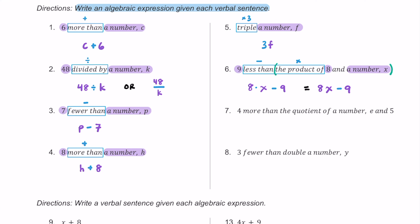For number seven, we have four more than the quotient of a number e and five. 'More than' means we're adding four onto something, and 'the quotient of' means dividing. Division takes precedence over addition, so we divide first: e divided by five. Then we add four, giving us e divided by five plus four. Written in fraction form: e over five, plus four.